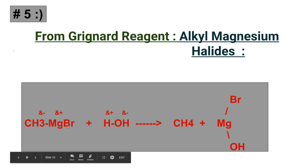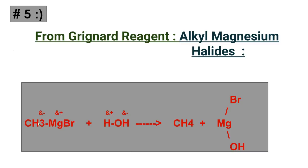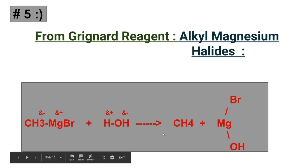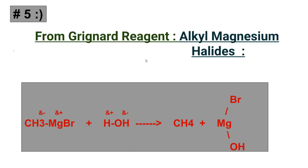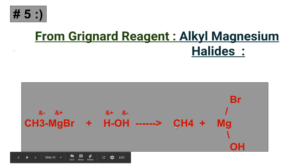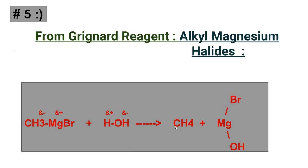The alkyl group has a partial negative charge, and magnesium bromide has a partial positive charge because magnesium is a metal. Hydrogen has a positive charge in water and hydroxide has a negative charge — opposites attract. So the CH3 group attaches to hydrogen and forms methane, and the rest forms magnesium bromide hydroxide. In this way, alkanes are produced from Grignard reagents. I hope this video was helpful — please like, share, comment, and subscribe. Thanks for watching, wish you all the best!